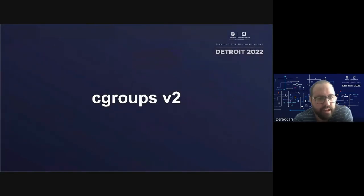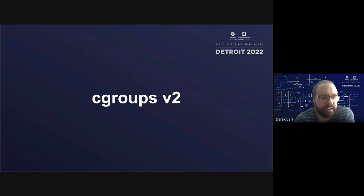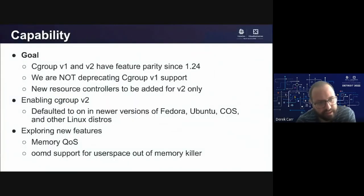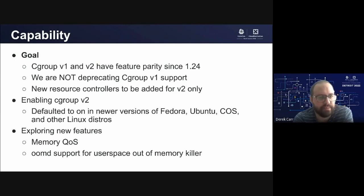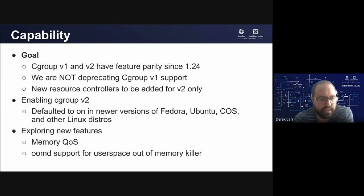Let's dive a little deeper on Cgroups V2. We talked about this in the last SigNode update, but it's important to emphasize now that it went stable because it will likely get more production usage. Just to level set: Cgroups V1 and V2 have had feature parity support since Kubernetes 1.24, but many Linux distributions or environments where users were running workloads in production were still only using Cgroups V1. V2 support is something we are anticipating feedback on in the years ahead. We are not actively deprecating Cgroups V1 support.